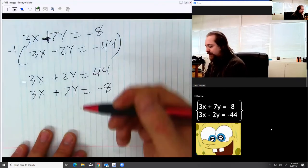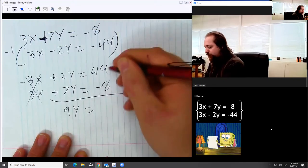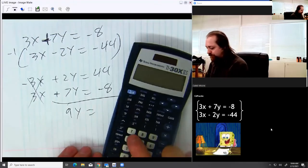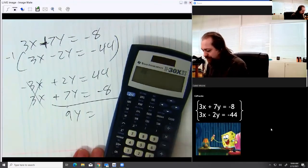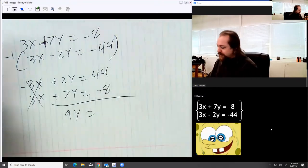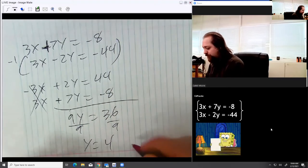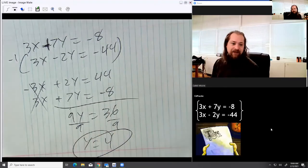All right, now it's easy. I'm going to cancel those out. 2 plus 7 is 9y. 44 minus 8 is going to be something you did this in your head. By the time I added it into the calculator, it's going to give me 36. Divide by 9. Y is equal to 4. Now that I have one, easy to find the other.